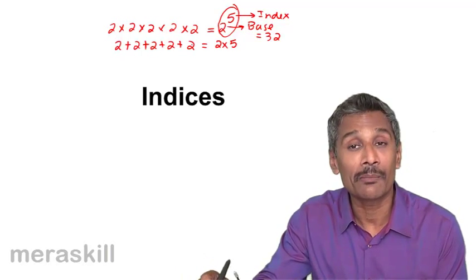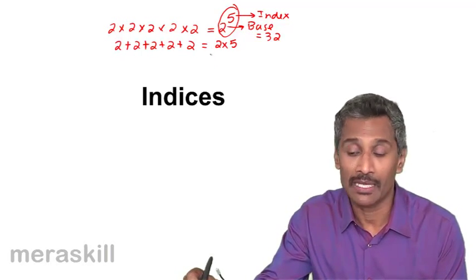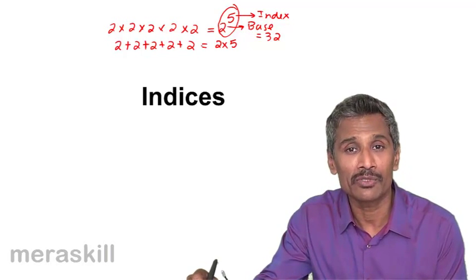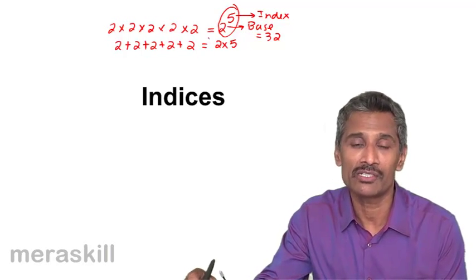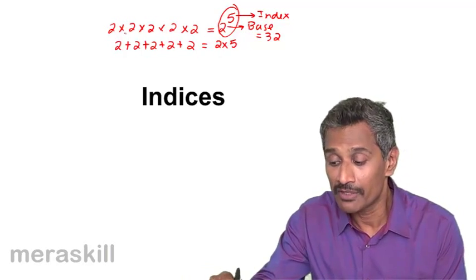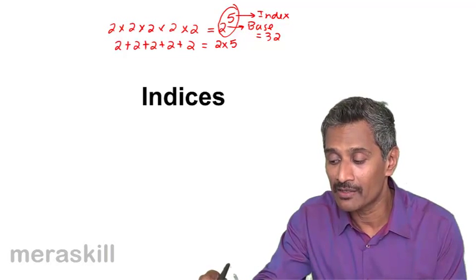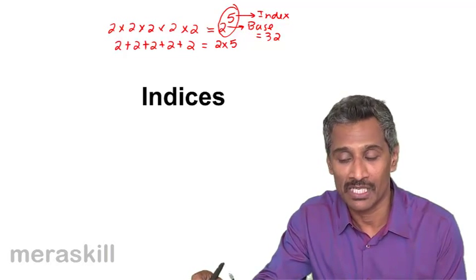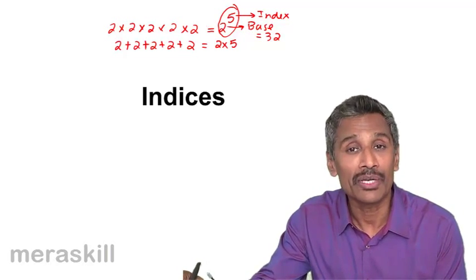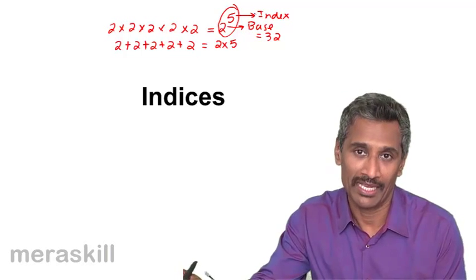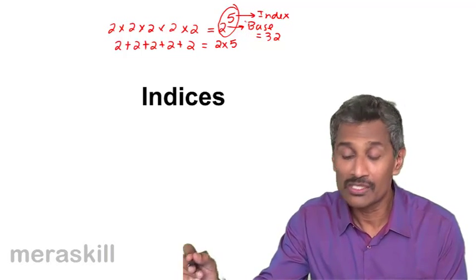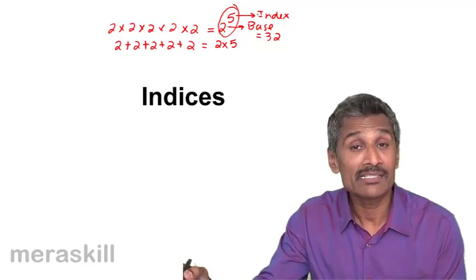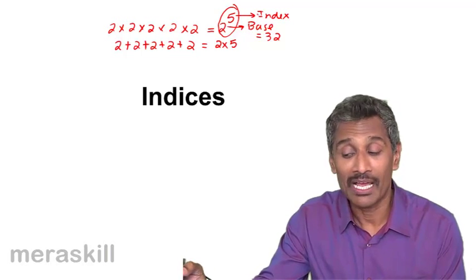This is quite different from adding a number by itself n number of times. When you add a number by itself n number of times, it is just n into the number. When you multiply a number by itself n number of times, it is the number raised to n. This is the concept of indices.